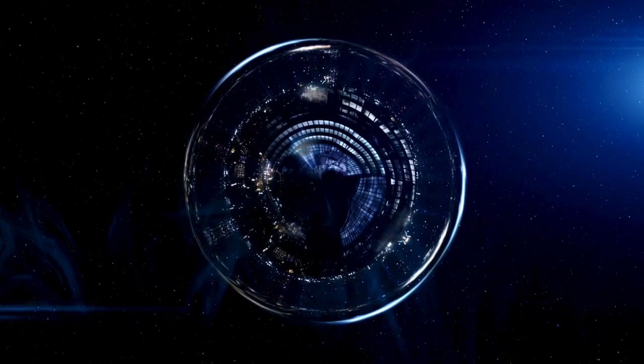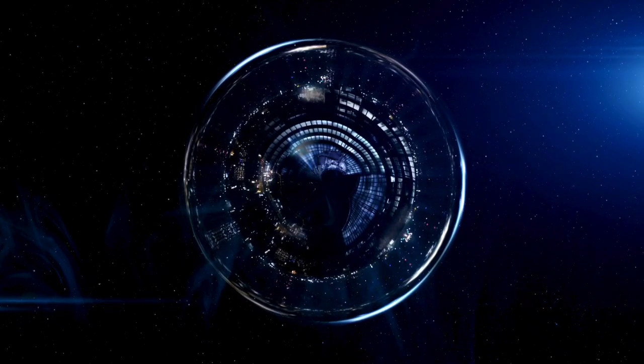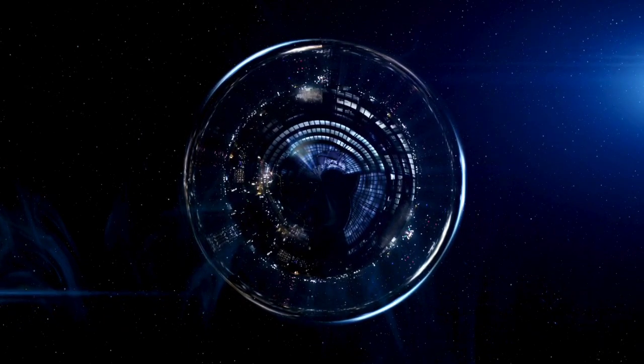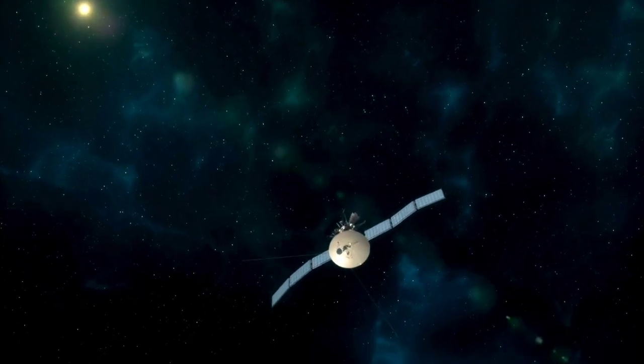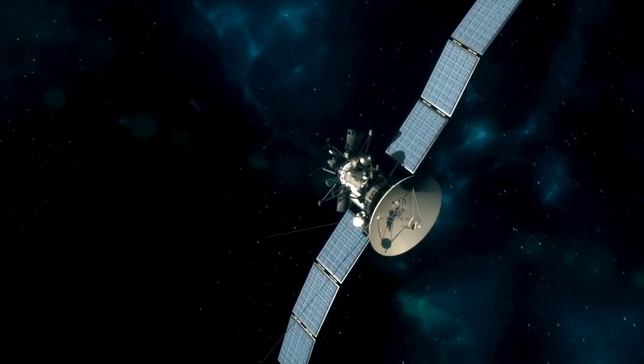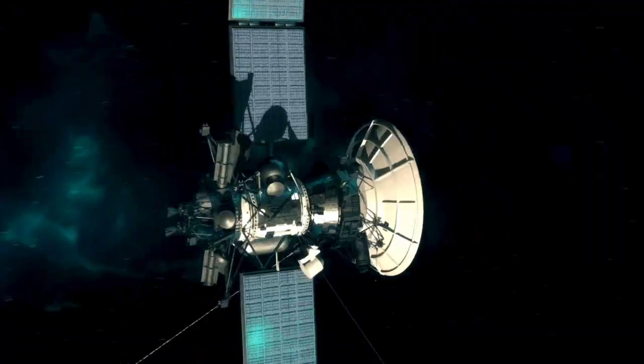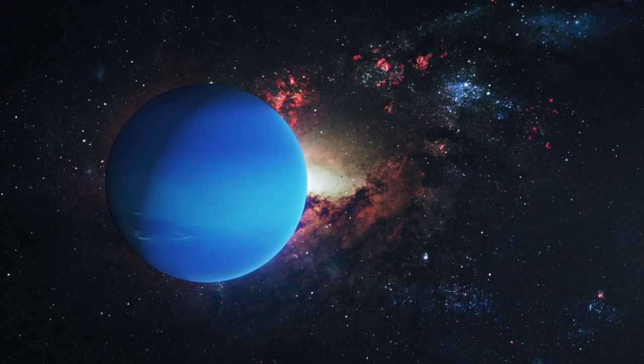Normally, comets get brighter and hotter as they approach the sun. But 3i Atlas didn't follow that rule. Instead, its surface temperature stabilized and even cooled perfectly in sync with the surrounding space.